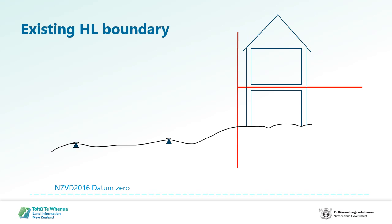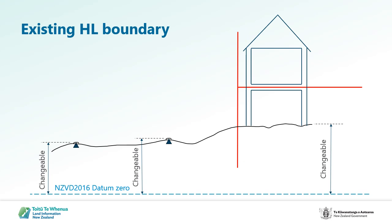Following the Kaikoura earthquake, the land in Wellington moved up about 5 centimetres, and the levels in Wellington were adjusted to reflect the change in height of the land and survey marks relative to the vertical datum — hence the 0.05 metre height change to Mount Albert number 3. So something to be aware of is that the true levels on marks and boundaries will change when wide-area uniform ground movement occurs. What won't change is the height difference between the height limited boundary and its witness marks.